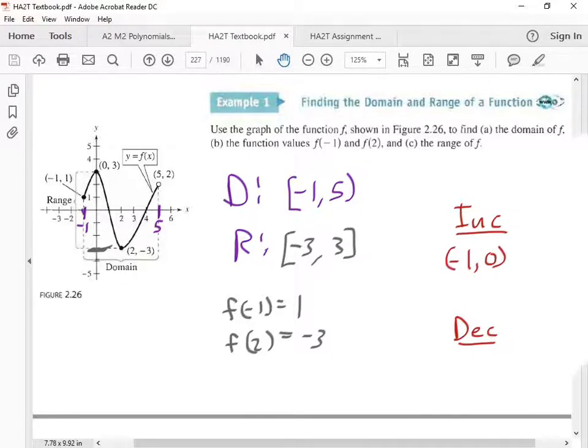Now whenever we're doing increasing and decreasing, always just put parentheses. You don't do brackets. Is there any other interval on this graph where we're increasing? From 2 to 5? So I'm going to put 2 to 5 right here. That's where we're increasing. Where are we decreasing? 0 to 2. That's it. You guys good? Now there's a couple other things in this section.